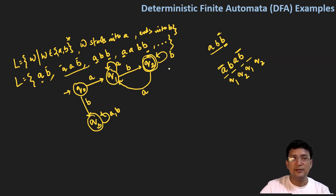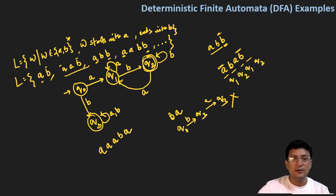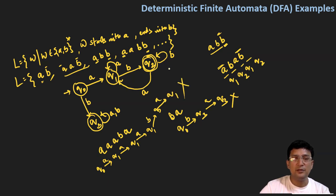If I am in the dead state and get an A or B, it doesn't matter — I will remain at the dead state only. Let's take a string that is rejected, for example 'BA': at q0, if I get B I move to the dead state q3; if I get another A I stay at q3, which is not the final state. Another example: 'AAABA' — it starts with A but does not end with B. With q0 on A move to q1, stay at q1 for more A's, on B move to q2, but on A come back to q1 which is not the final state, so this string is rejected.